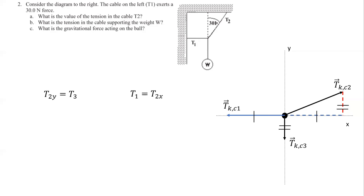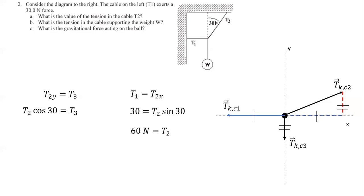Notice the angle is measured with respect to the vertical axis. So to find the y component you'd use cosine, and to find the x component you'd use sine. So we have T2 cosine 30 equals T3. They give us T1 is 30 newtons, so that means 30 newtons equals T2 sine 30. Solving for T2, we get T2 is 60 newtons. Plugging that into the vertical equation, we get T3 is equal to 52 newtons.